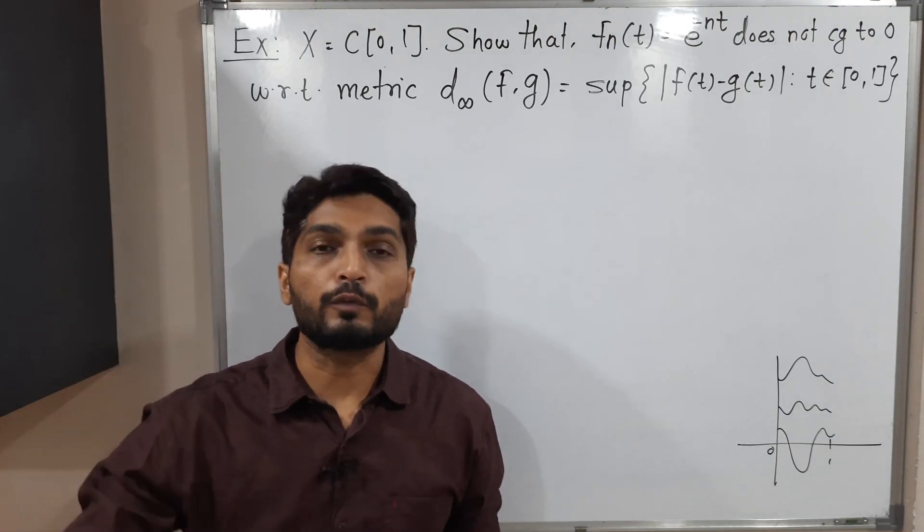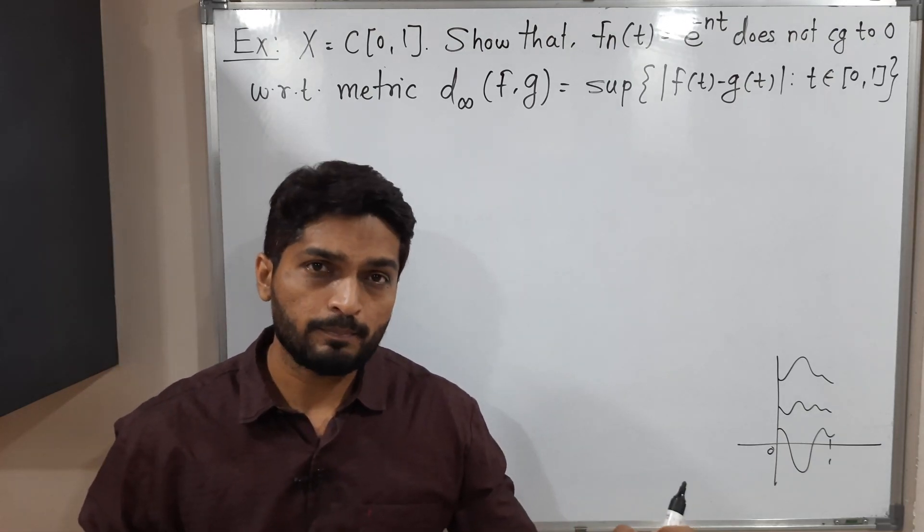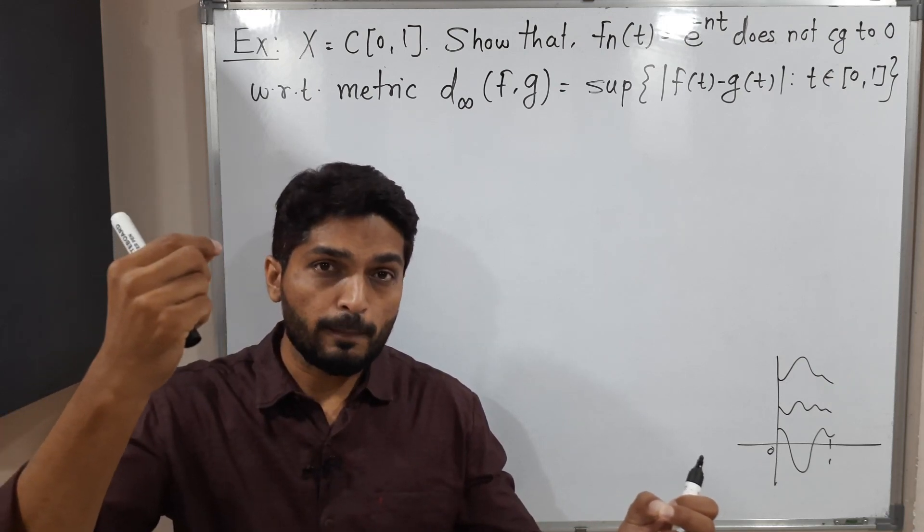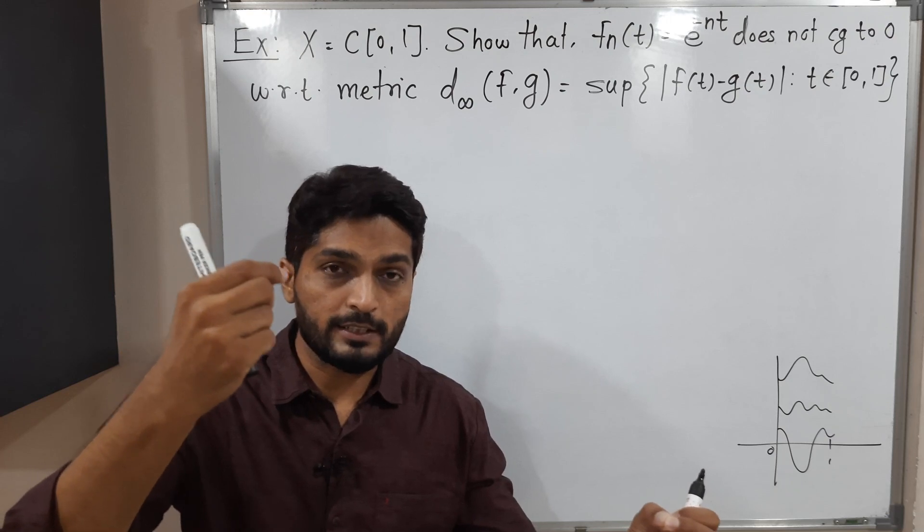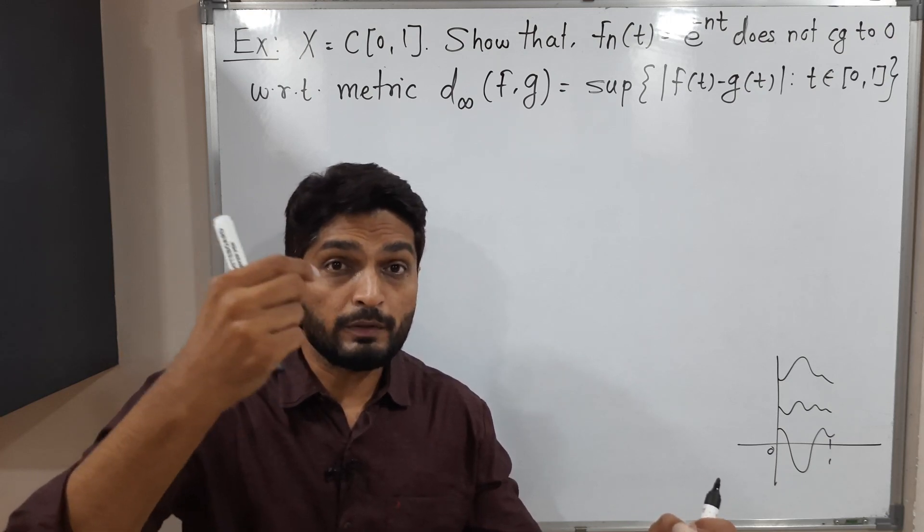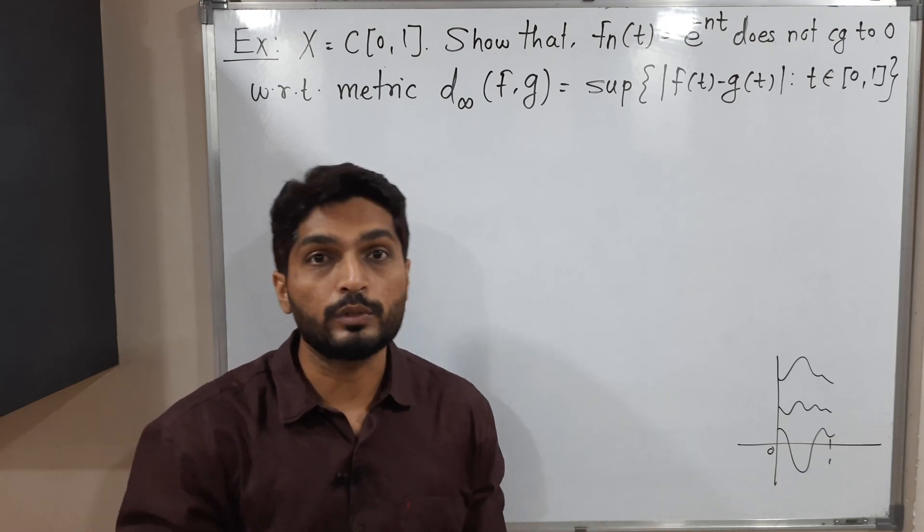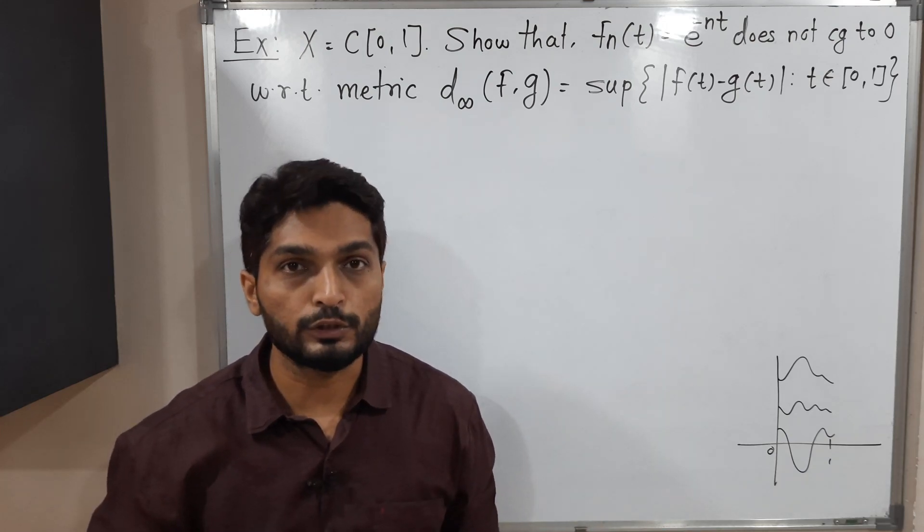When we say the sequence converges to any point X, when we say that Xn converges to X, if the distance between each point of that sequence and X is moving towards 0, then we say the sequence is convergent to 0.